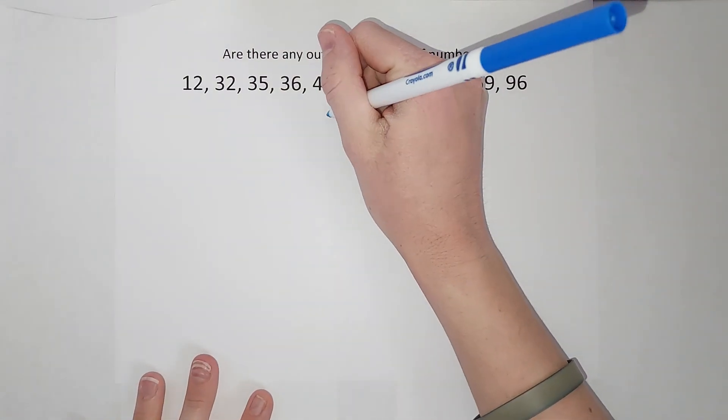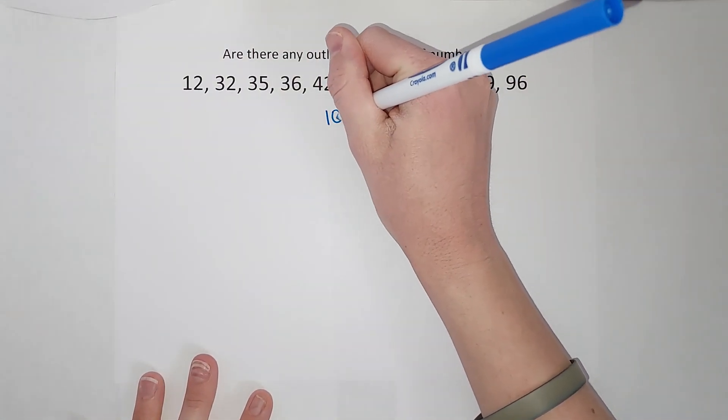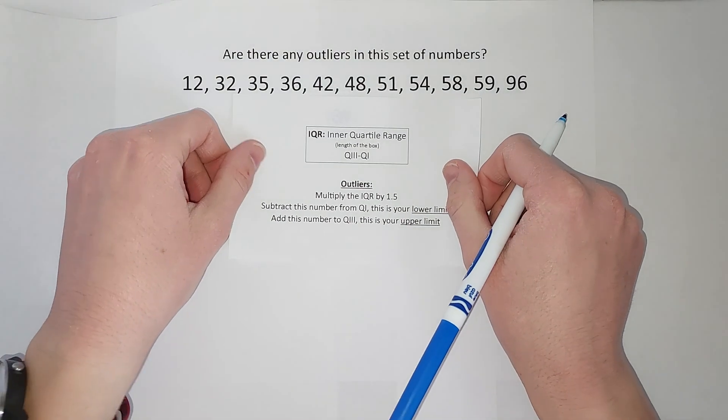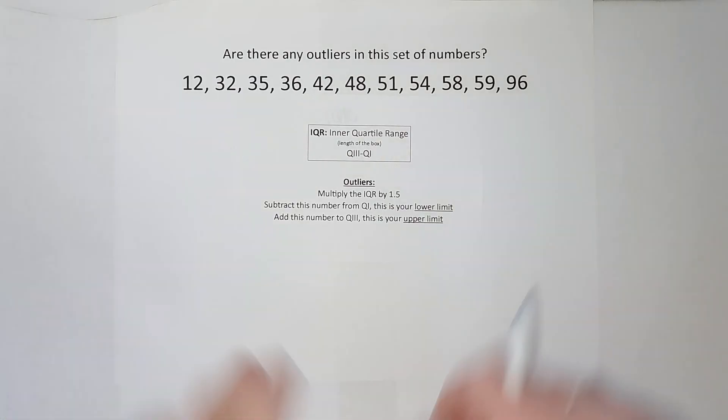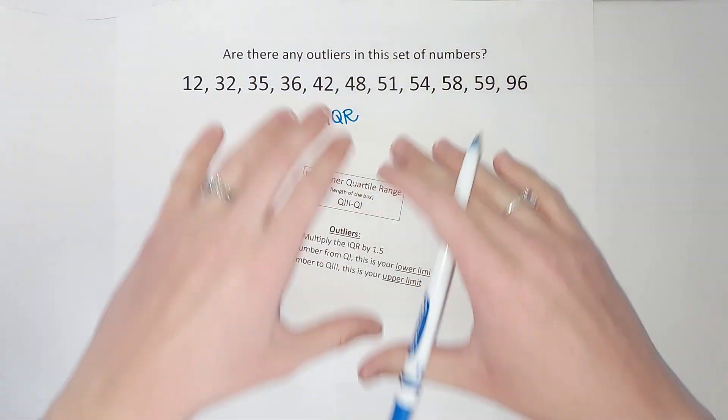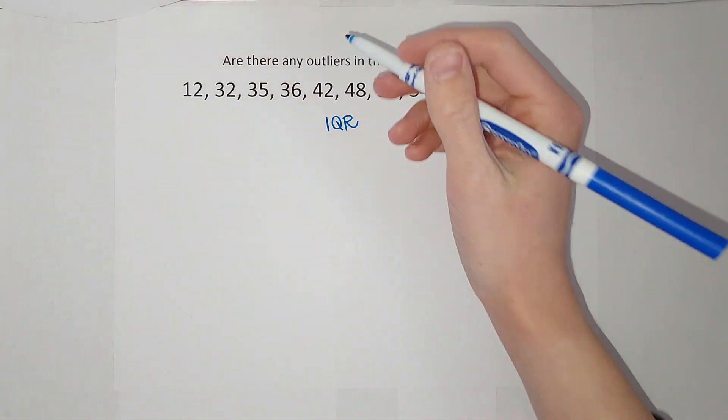Okay, so what we use is called our inner quartile range or the IQR. I'm going to put up a little paper for my people who like to read it, take a screenshot of this if it'll help you. But if you're like, don't tell me, just show me, that's what I'm going to do now.